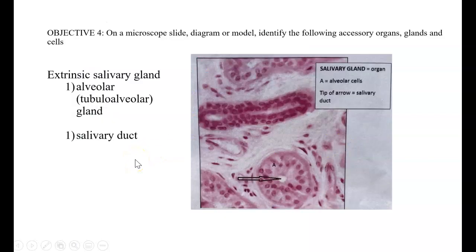Objective four is identifying the parts of the salivary glands. So, this is a histograph of a salivary gland. You can see that under A are the different alveolar cells. And then at the tip of the arrow is a salivary duct. So, those alveolar cells will produce that saliva.